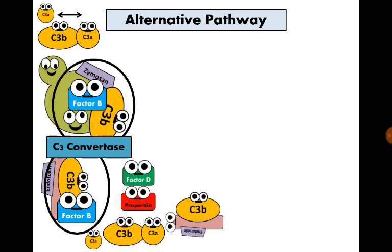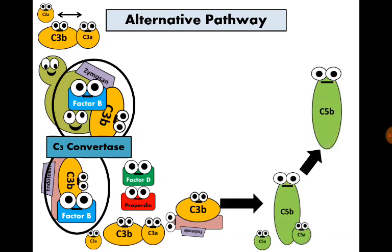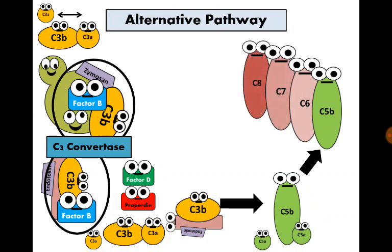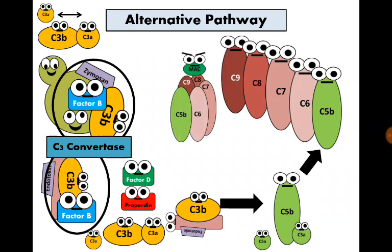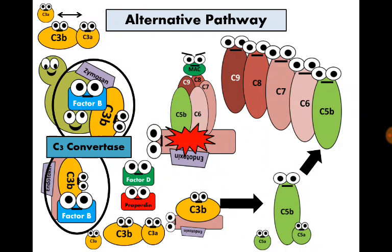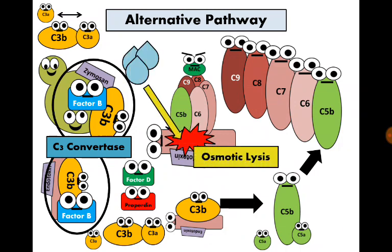More C3B then becomes attached to organisms, stimulating C5 hydrolysis into C5A and C5B. C5B attaches to C6, C7, C8, and C9, forming a membrane attack complex that attaches to the surface of the bacteria carrying endotoxin, forming pores in its wall. Fluid then enters the bacteria, causing osmotic lysis.